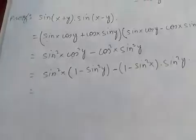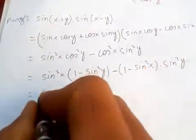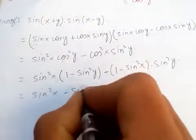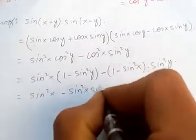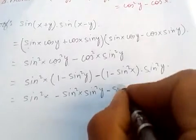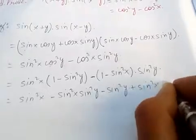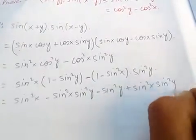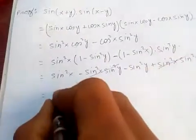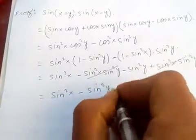And again, if you multiply this out, it is sin squared x minus sin squared x times sin squared y, and minus sin squared y minus minus — plus sin squared x times sin squared y. So these two terms cancel.